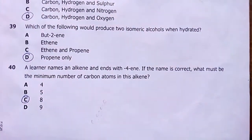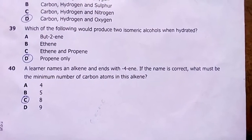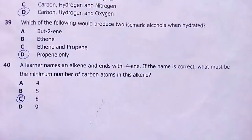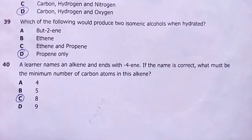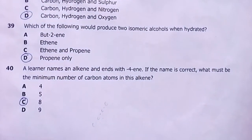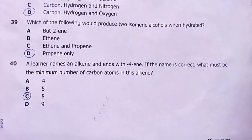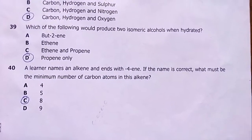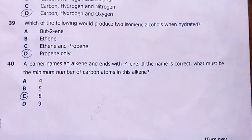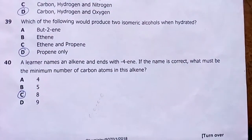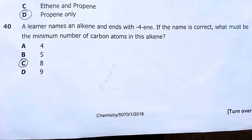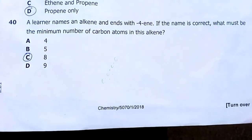The last question: Elena names an alkene ending with -4. If the name is correct, what must be the minimum number of carbon atoms? The answer is 8 — you start counting from the end closest to the double bond, and the smallest molecule that accommodates position 4 must have eight carbon atoms. This marks the end of chemistry paper one, 2018. Have a good study time.